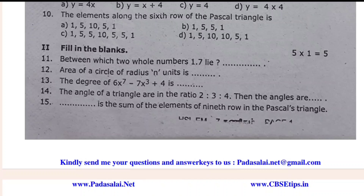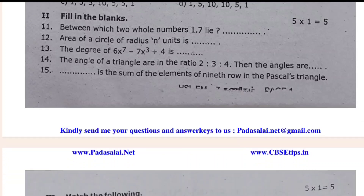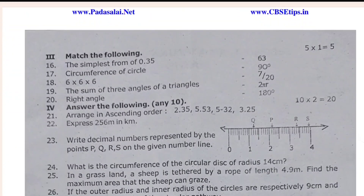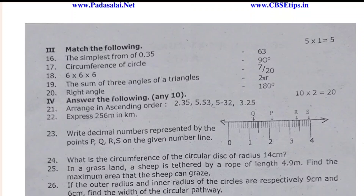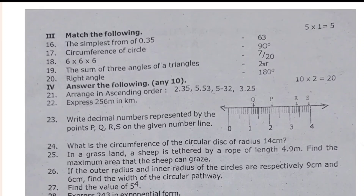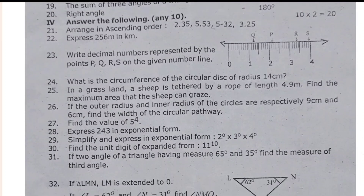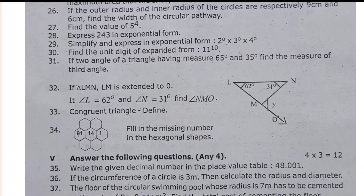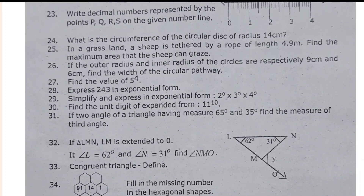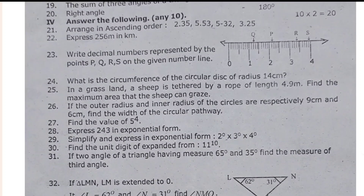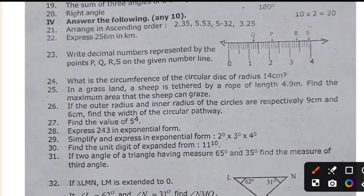Let's get into the answers. The simplest form of 0.35 — the circumference of a circle — 666 is the sum of the triangle and the right angle. This is the match. The two marks are 10 to 2, and you can get the total of 13.